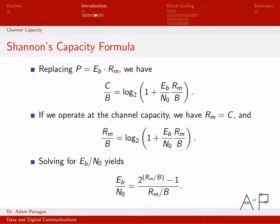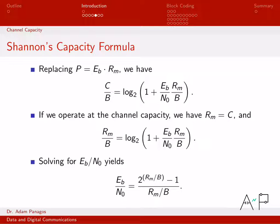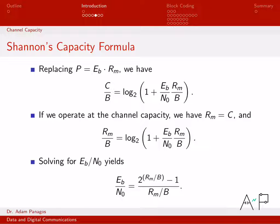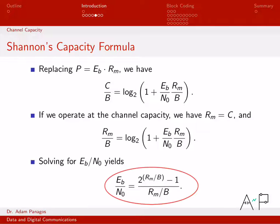Now let's take this equation and assume we're going to operate at a data rate equal to the channel capacity. In that case, the data rate equals C, so C and Rm are the same thing. Replacing C with Rm, I have an equation for the special case of operating at channel capacity. Notice how Rm/B appears on both sides — raising both sides to the power of 2 eliminates the log, then bringing over the 1 and dividing both sides by Rm/B isolates the ratio Eb/N₀, which is really our signal-to-noise ratio.